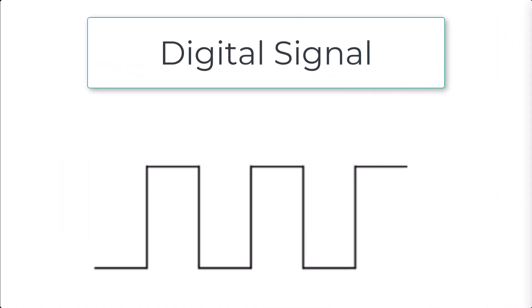On the left, you can see the digital signal. A digital signal has only two states, on and off. These states are often represented by voltages.